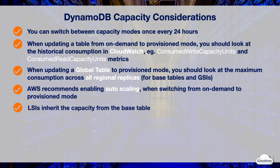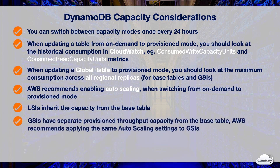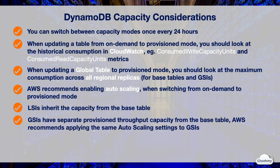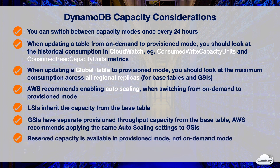LSIs inherit the capacity from the base table, so when deciding capacity for the base table, you should also consider LSIs. GSIs have separate provisioned capacity from the base table, and AWS recommends applying the same auto scaling settings to all your GSIs. With provisioned mode, you can purchase reserved capacity for your tables to get significant cost savings. Reserved capacity is only available in provisioned mode, not in on-demand mode.